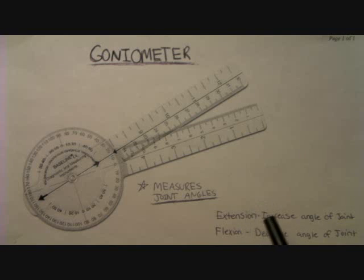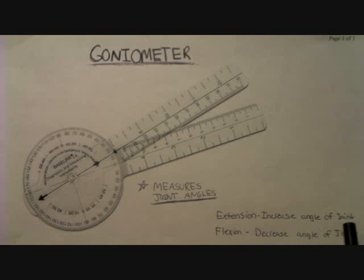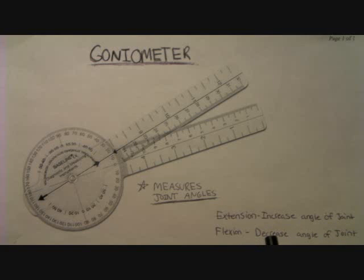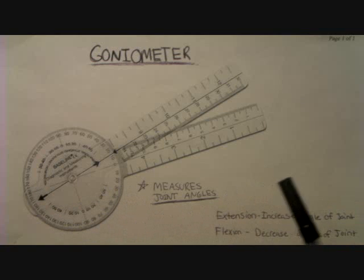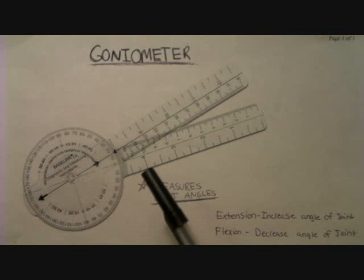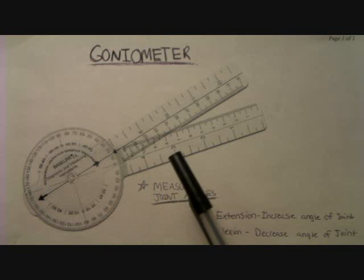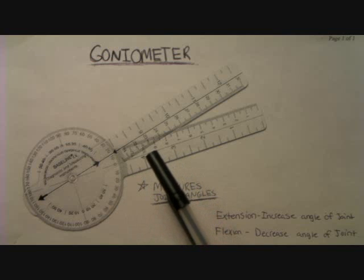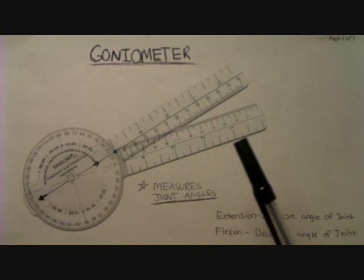You might wonder what flexion and extension are. Extension is an increase in the angle of a joint, but flexion is the decrease in an angle of a joint. To measure this, there's a device called a goniometer and it measures the angle of your joint by degrees.